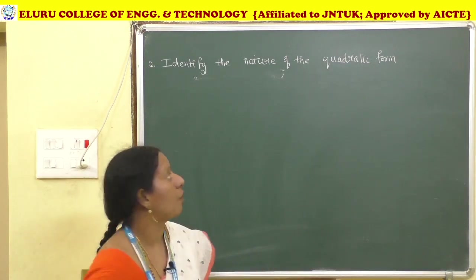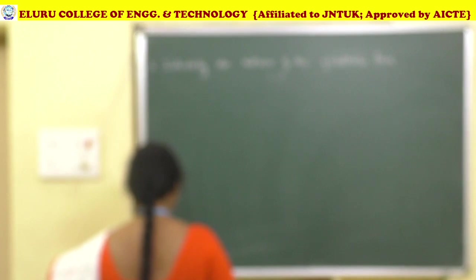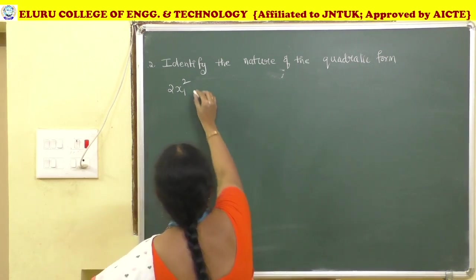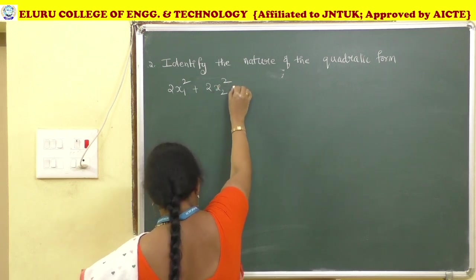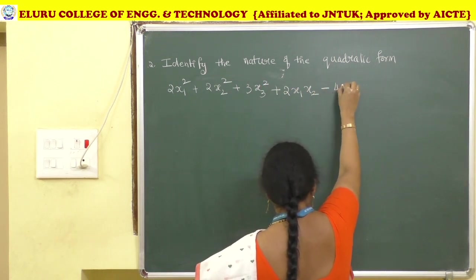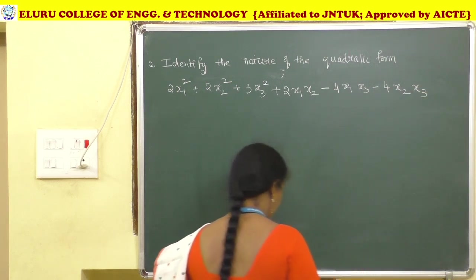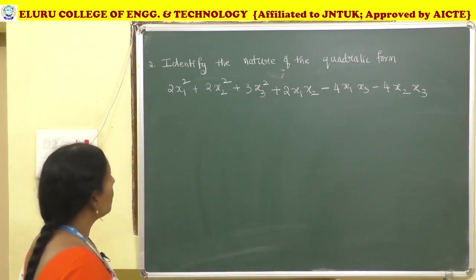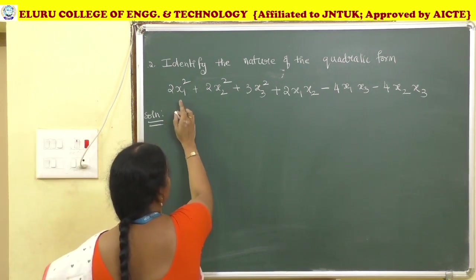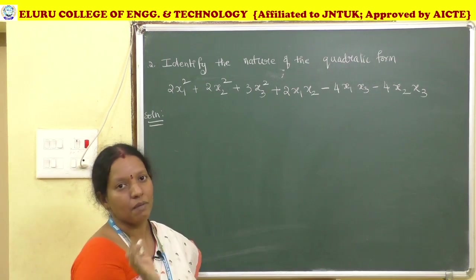The next problem: identify the nature of the quadratic form 2x1² + 2x2² + 3x3² + 2x1x2 − 4x1x3 − 4x2x3. There are three variables x1, x2, x3, so we get a 3×3 matrix A.